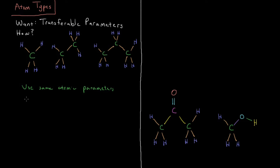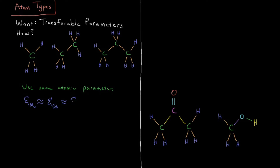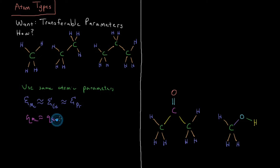In the Van der Waals term, we have a parameter called epsilon encoding the strength of the Van der Waals interaction. So we could have the epsilon in the methyl be about the same as epsilon for the carbon in ethyl, which is about the same as epsilon in propyl. And maybe as well for the atomic partial charge used in the electrostatic term — the charge for the methyl is about the same as for ethyl, which is similar to the partial charge for propyl.